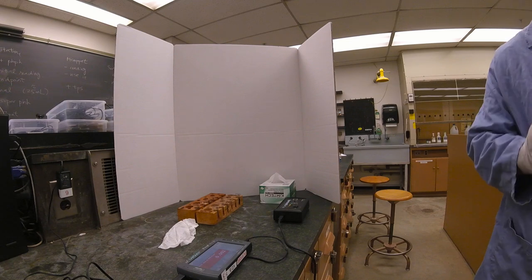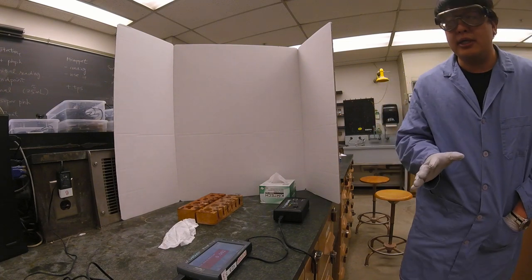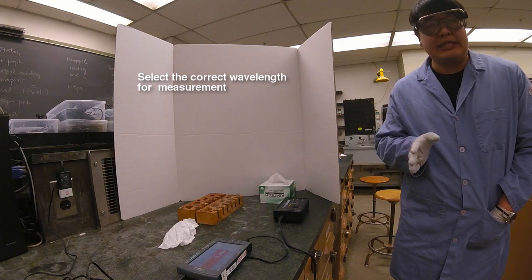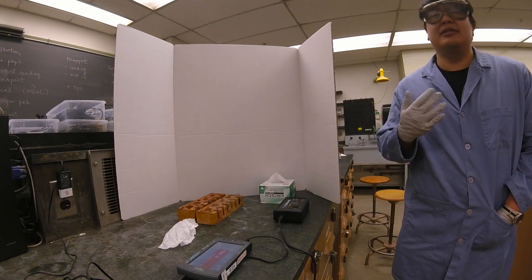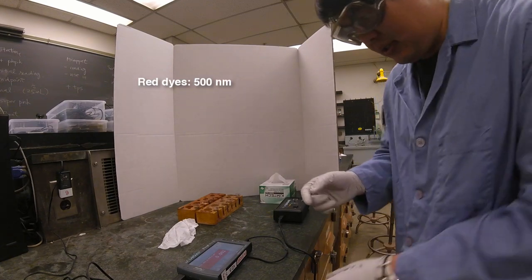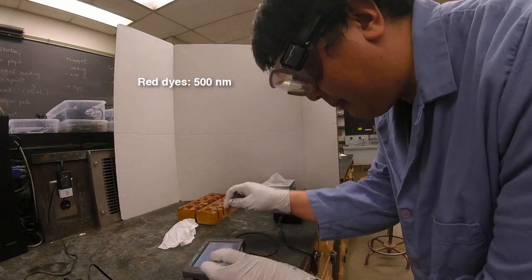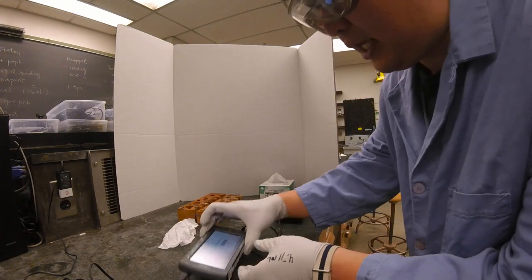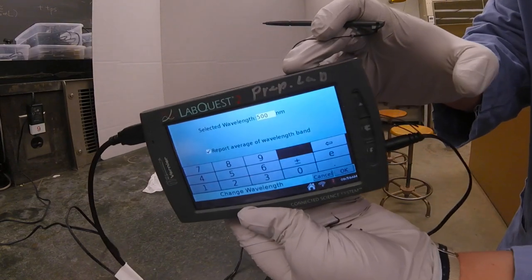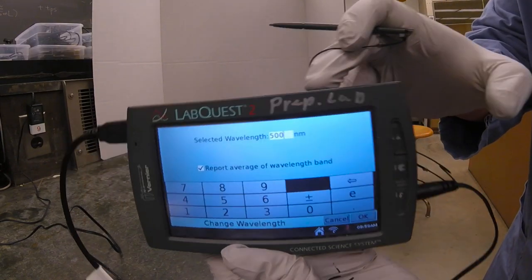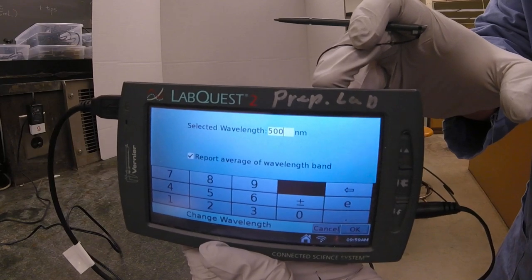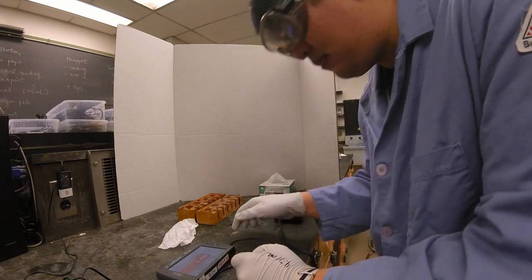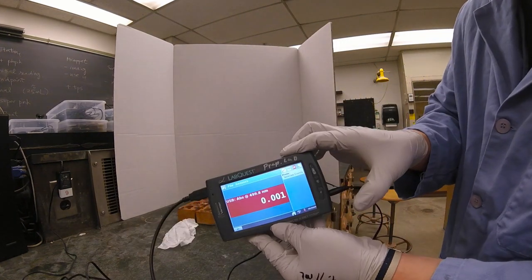The first thing that's really important is you have to select the correct wavelength for your sample. We're going to do the red sample right now, so the wavelength we want is 500 nanometers. In this window it's prompting me to select the wavelength. I'm typing in 500 and hitting okay.